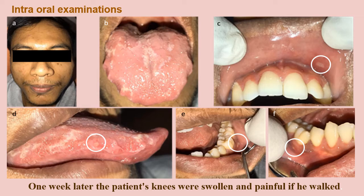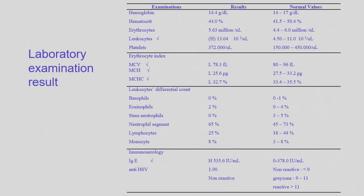There were painless erythematous areas surrounded by white plaques forming an island-like pattern on the dorsum of the tongue. One week later, the patient's knees were swollen and painful when walking. Laboratory examination results showed high values of leukocyte and IgE, and low values of MCV, MCH, and MCHC.